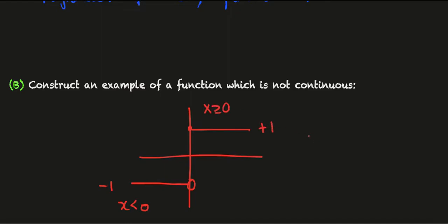So if we write this more formally, f of x is the function which is one for x greater than or equal to zero and minus one for x less than zero.